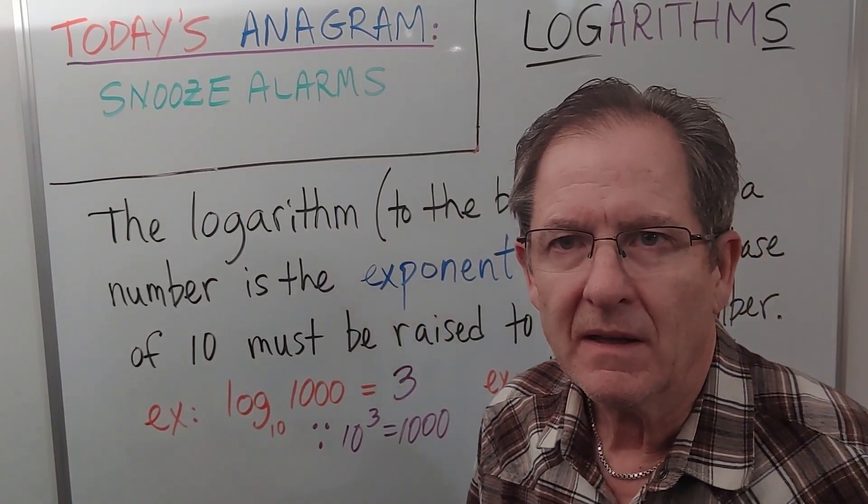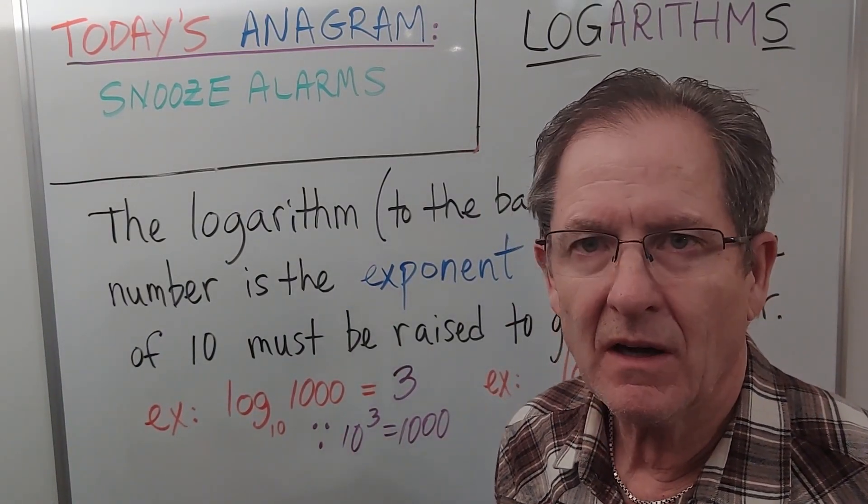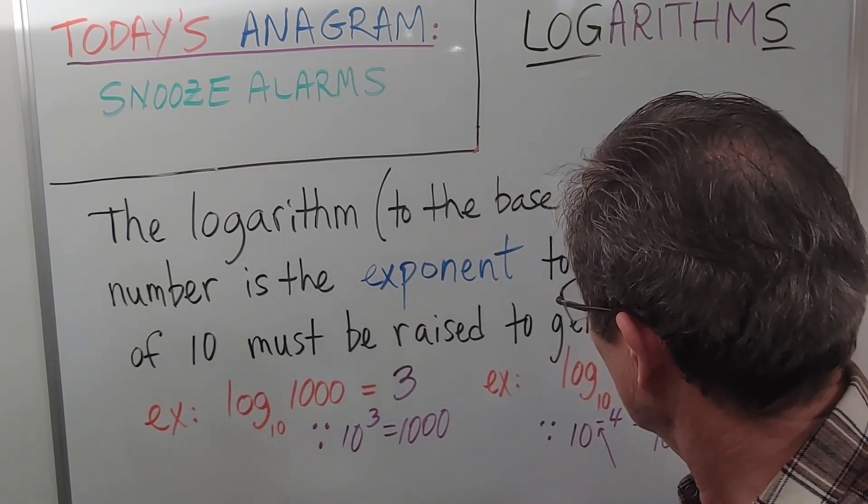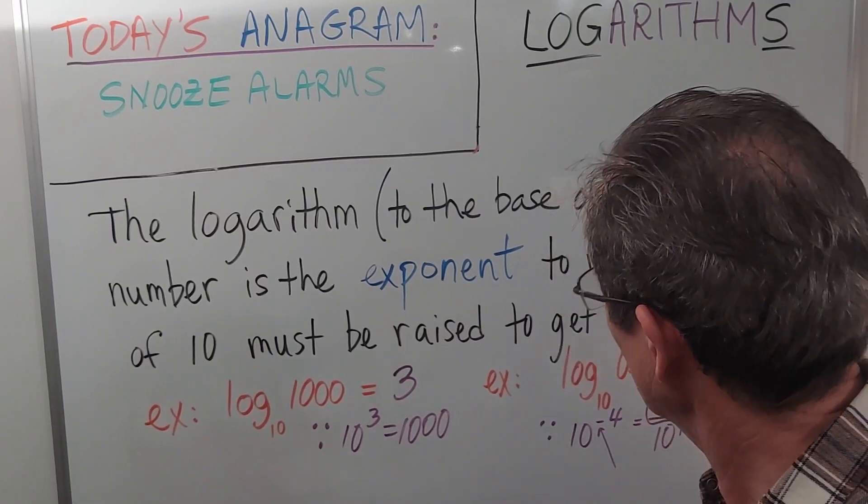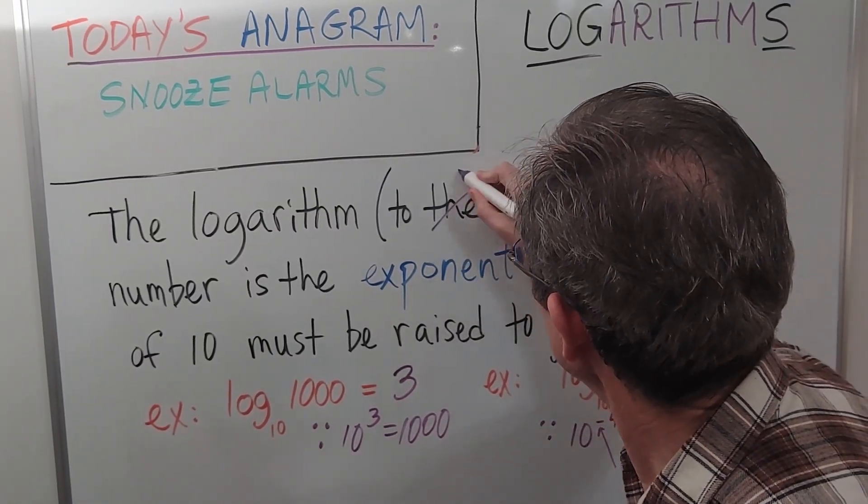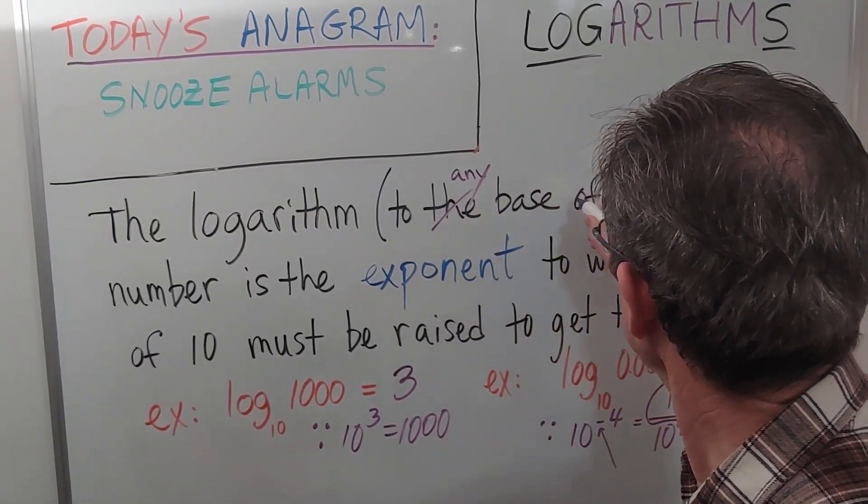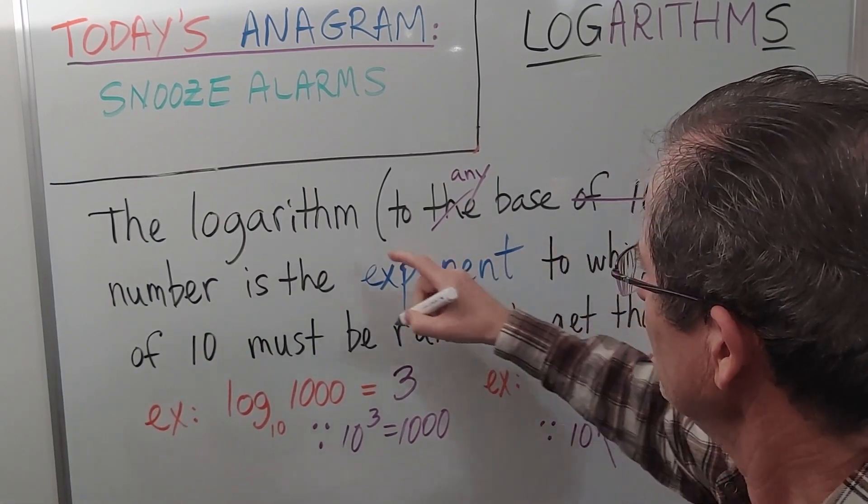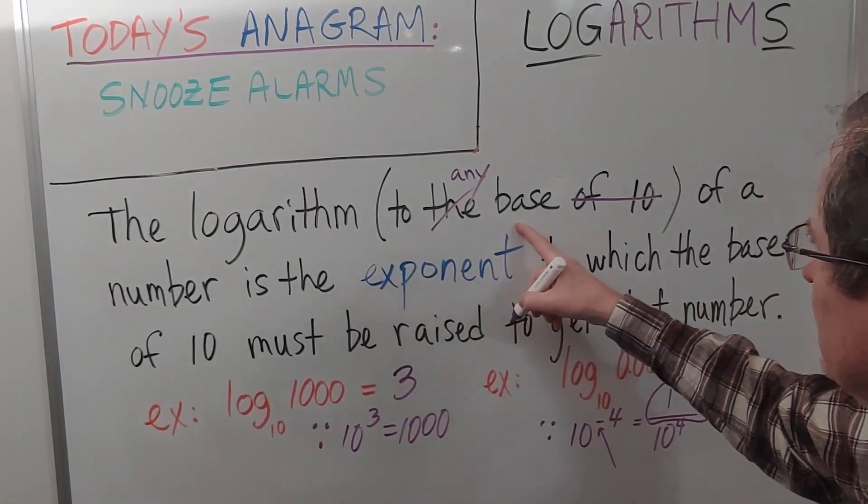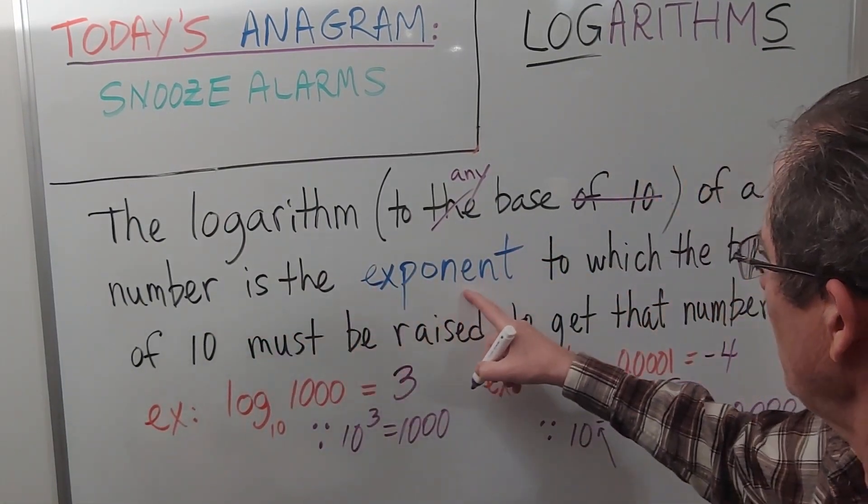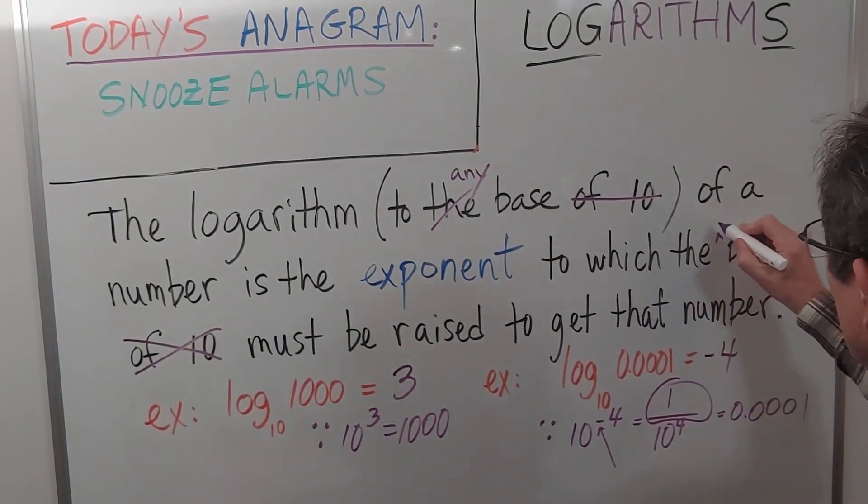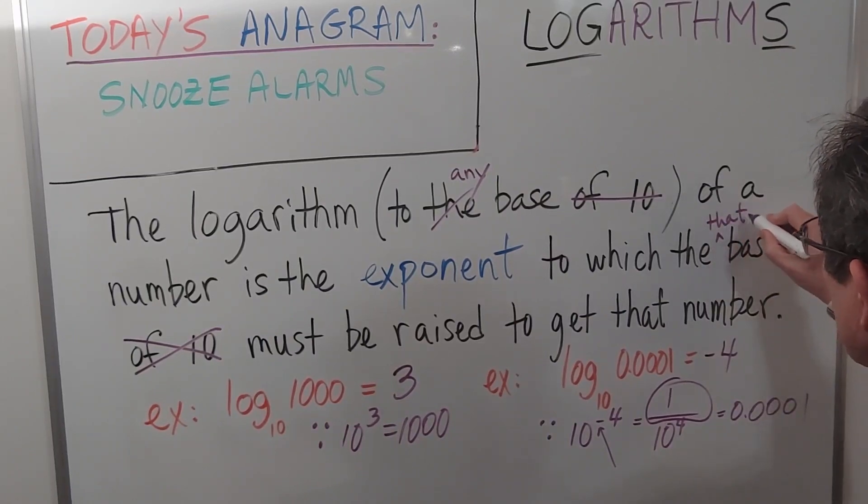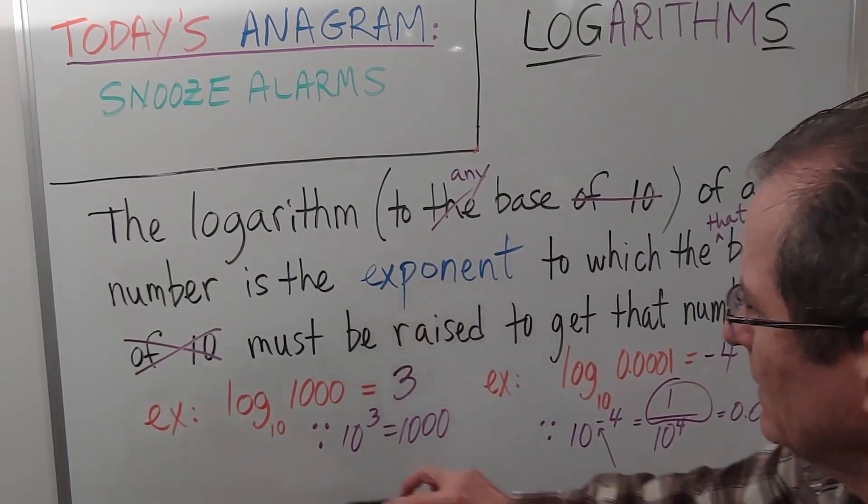Now let's change that to the log to a different base, instead of 10 anymore. So the logarithm to any base of a number is the exponent to which that particular base must be raised to get that number.